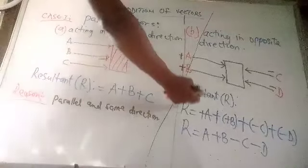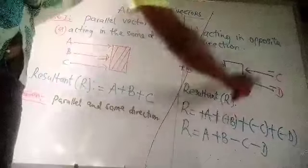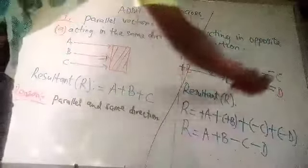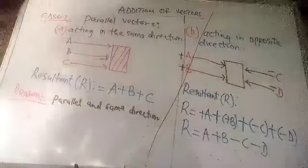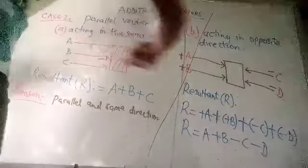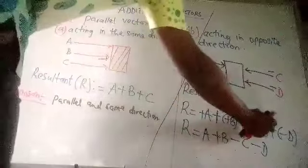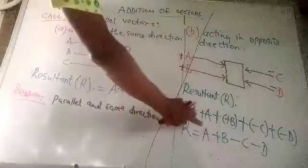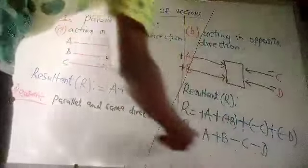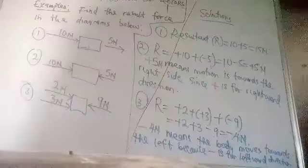So we have added them together: plus A plus B plus minus C plus minus D. Don't forget, the minus here shows that they are facing left direction. The positive here shows that they are facing right direction. So by the time plus and minus will give you minus, plus and minus will give you minus. So it now becomes A plus B minus C minus D. Whatever you get from this is the resultant.